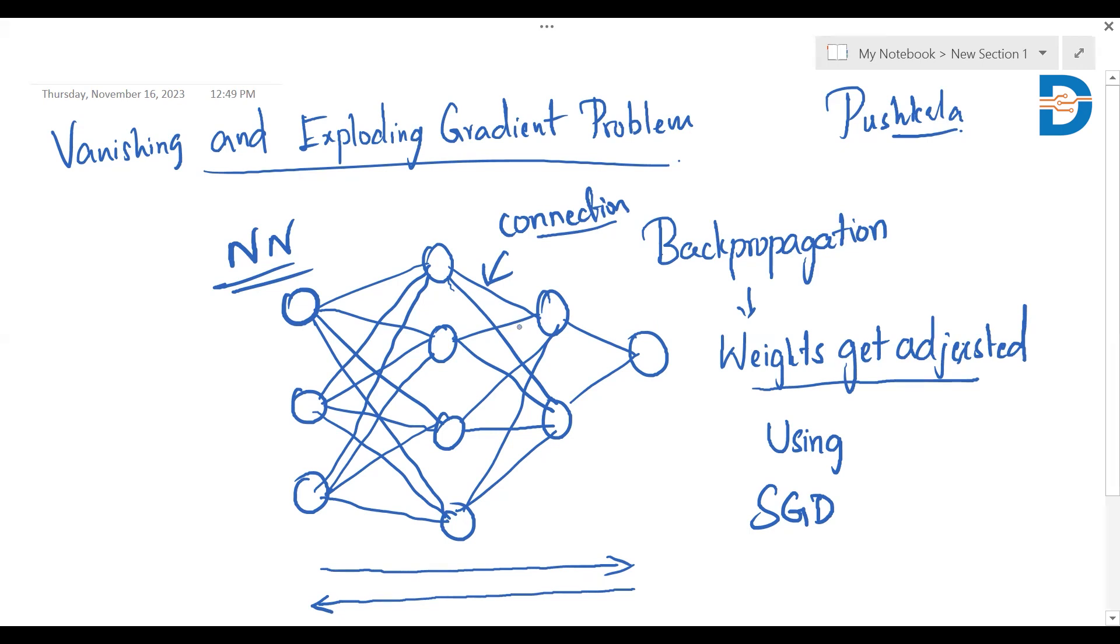So how this weight gets adjusted, we use something called stochastic gradient descent, SGD.